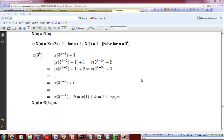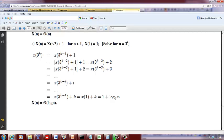Okay, so let us see how to solve this recurrence: X(n) = X(n/3) + 1 for n > 1, and X(1) = 1. If you anywhere have a recurrence of